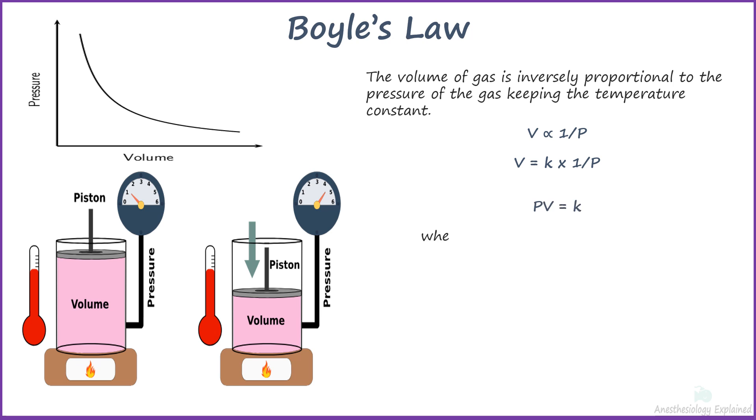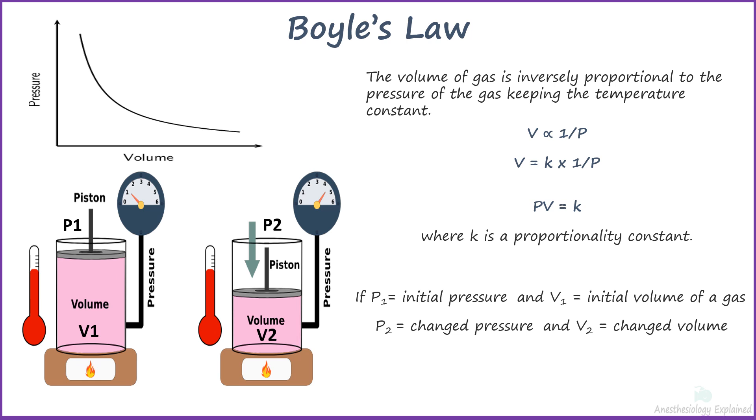Since temperature is constant, pressure multiplied by volume is equal to constant. Finally, if P1 and V1 are the initial pressure and volume of a gas, and P2 and V2 are the changed pressure and volume, we can write as P1V1 equals P2V2.